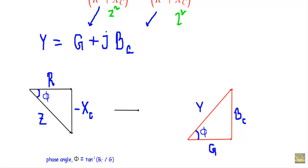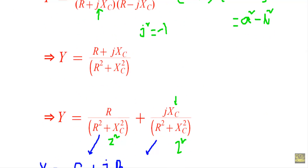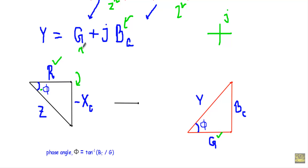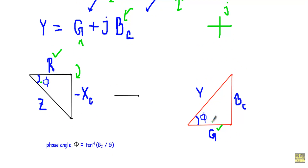Therefore, the admittance of a capacitive circuit is Y = G + jBC, where BC is positive. In the admittance triangle, conductance G is on the horizontal axis and BC is in the positive imaginary direction, so the hypotenuse represents Y. The phase angle is φ = tan⁻¹(BC / G), which is positive. The magnitudes of the impedance and admittance angles are equal, but both are positive for the capacitive case. That's it, thank you.